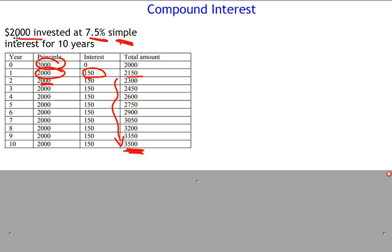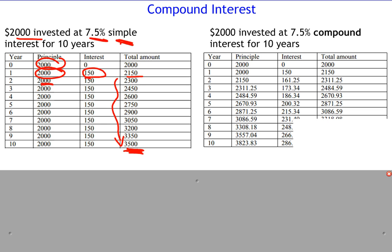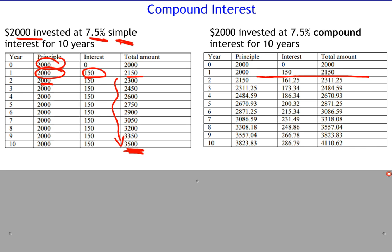Now we're going to compare that to compound interest. The idea with compound interest is that you get interest on top of interest. Here's a similar table showing the growth with compound interest. The first two rows are identical — the first year you have two thousand dollars and get a hundred and fifty dollars interest. But that two thousand one hundred and fifty dollars becomes the principal for the second year. So now we're calculating seven and a half percent of two thousand one hundred and fifty, and we get one hundred and sixty-one dollars and twenty-five cents — a little more interest because there's a little more principal. This procedure repeats itself as you go.